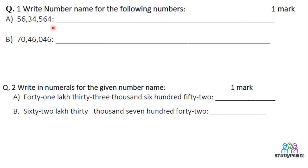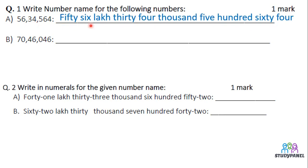Let us do that first. This is 4 at the 1's place, then 10's, 100, 1000, 10,000, lakh, 10 lakh. So here we can say that it is 56,34,564.